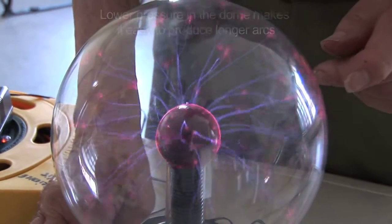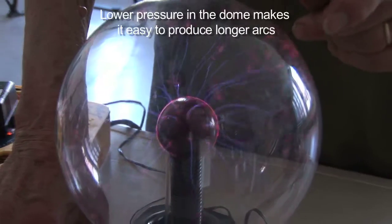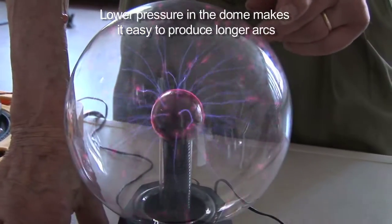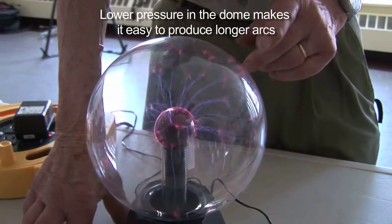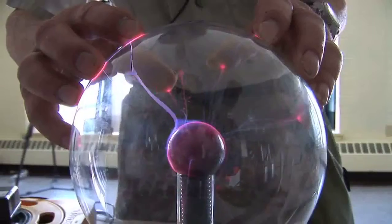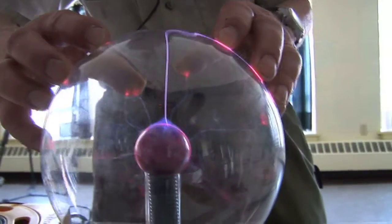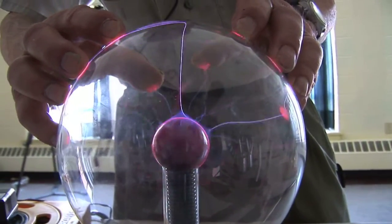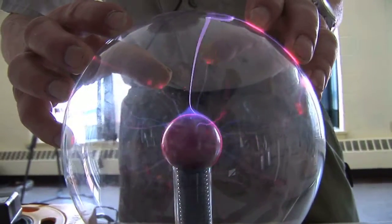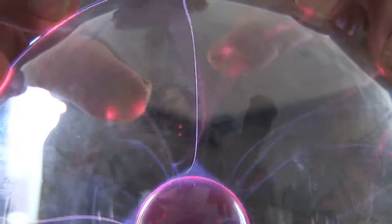What we have is a dome, which we have reduced the pressure so that the distance between the molecules in the air is longer, called a mean free path. And so, we put an electric field from a high-voltage generator that's in the base of the unit on that little knob inside.